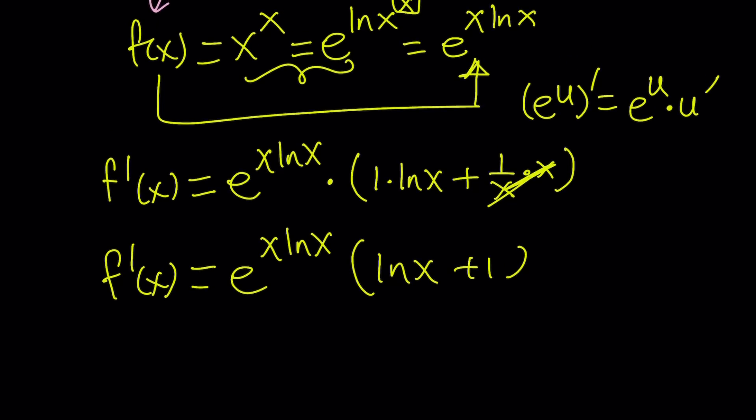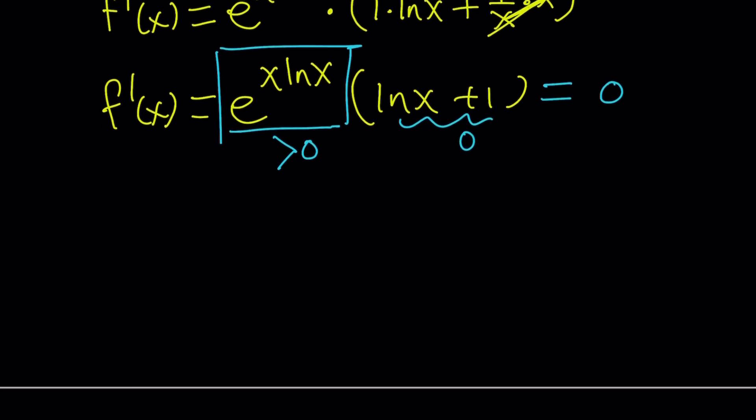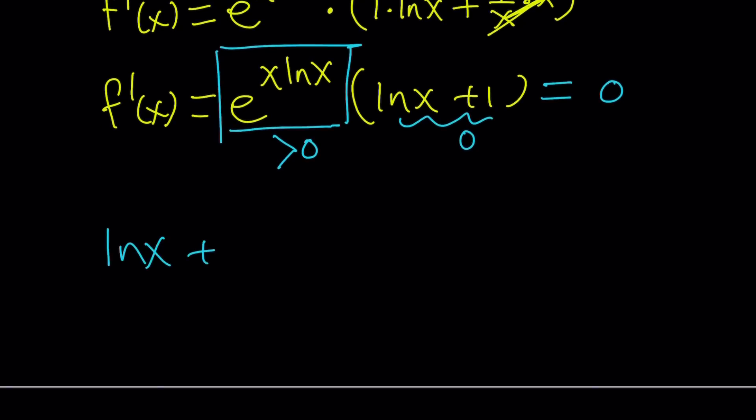Anyways, so when you set this equal to 0, obviously e to the power something cannot be negative, right? This is always going to be positive. It can't even be 0. So this has to be 0. So that gives us ln x plus 1 equals 0, which means ln x equals negative 1, which means x equals e to the power negative 1 from definition of logs. But that can be also written as 1 over e. So that's our critical point.